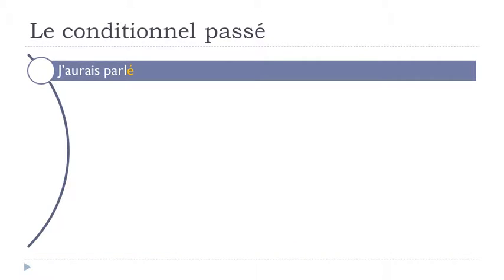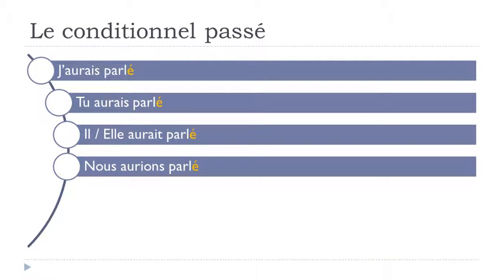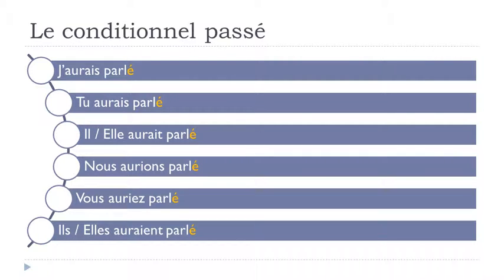Let's take a full example with parler. The conditionnel passé is formed with avoir at the conditionnel présent plus the participe passé parlé: j'aurais parlé, tu aurais parlé, il aurait parlé, elle aurait parlé, nous aurions parlé, vous auriez parlé, ils auraient parlé, elles auraient parlé.